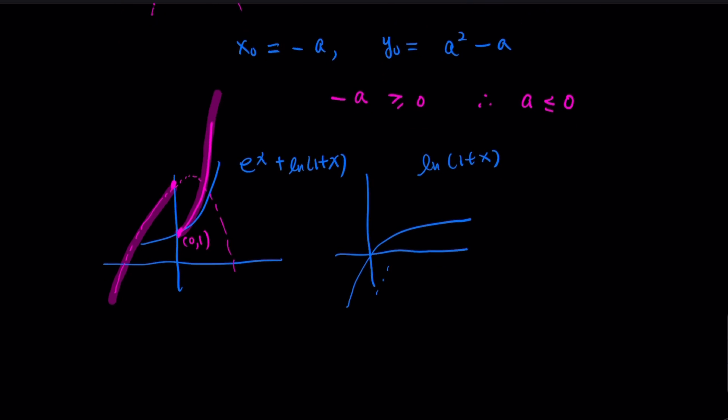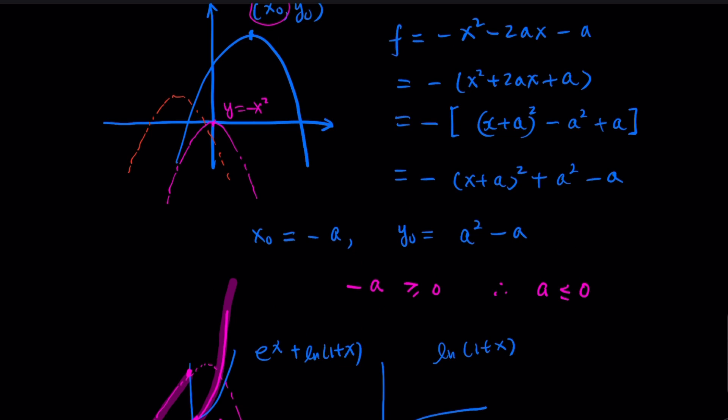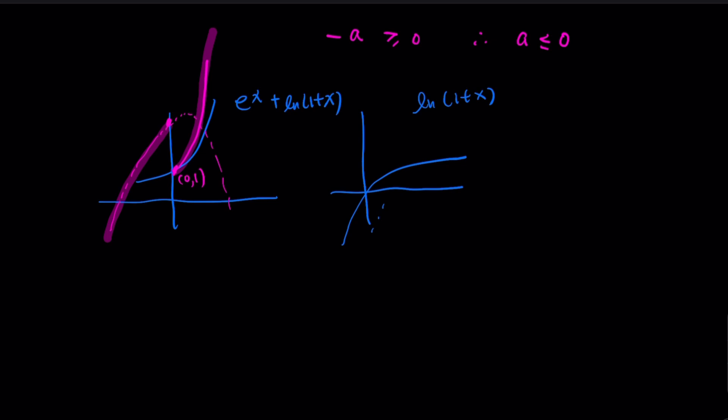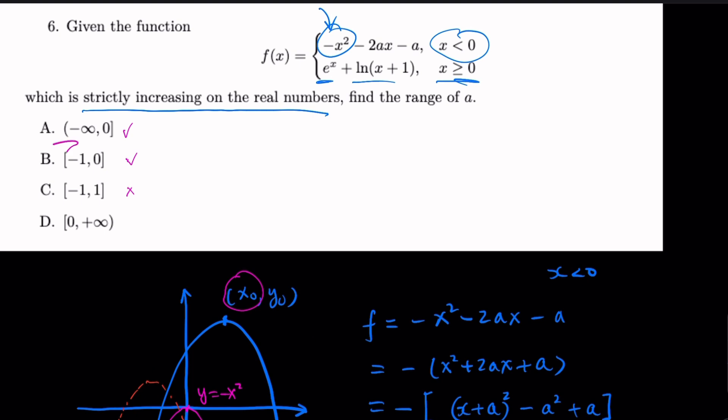So when x equals 0, you plug in to the equation. When x equals 0, this goes away, this goes away. It's negative a. So which means -a has to be smaller than 1. Combine the two results. So this would be greater than -1. So a belongs to the (-1, 0) interval. So the answer is b.